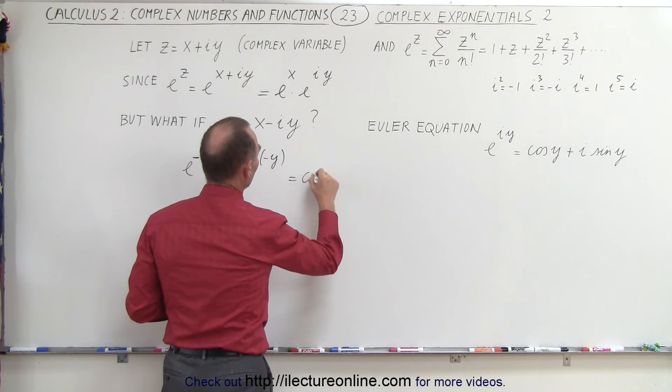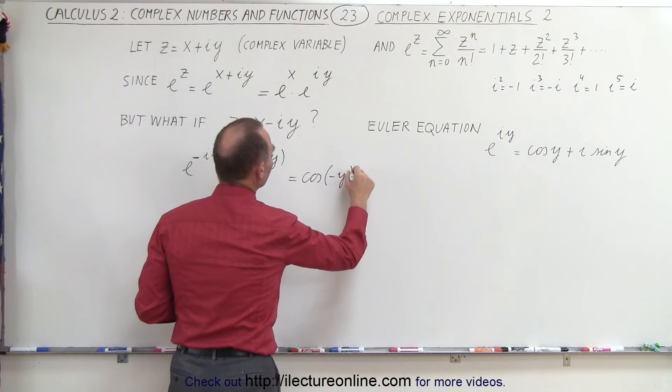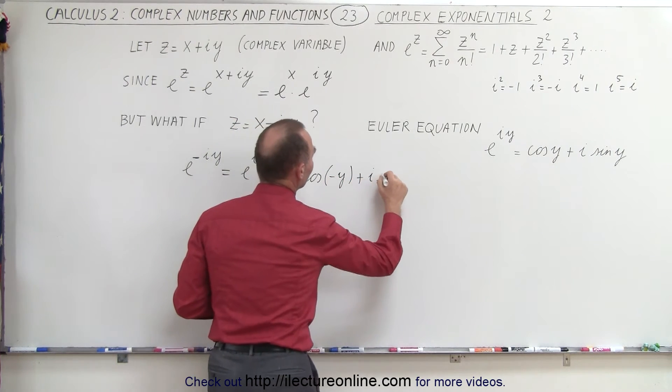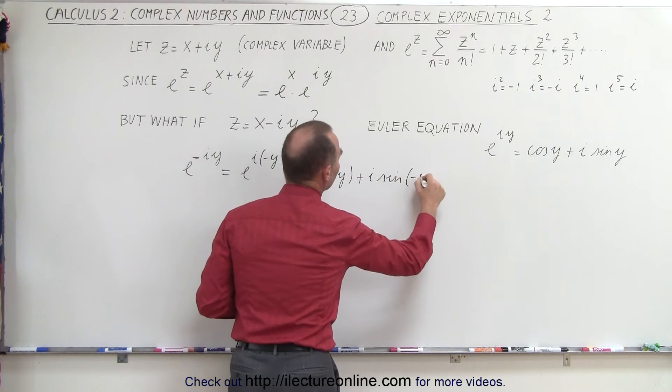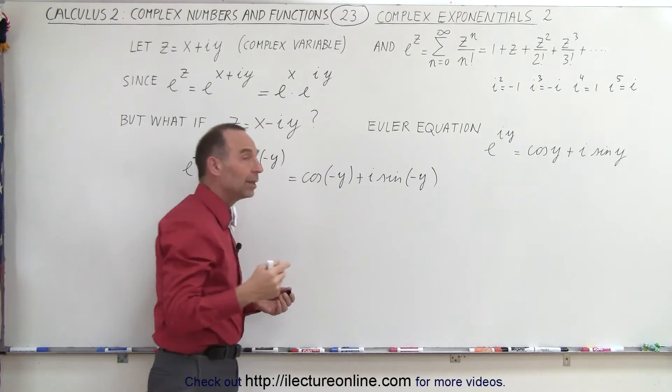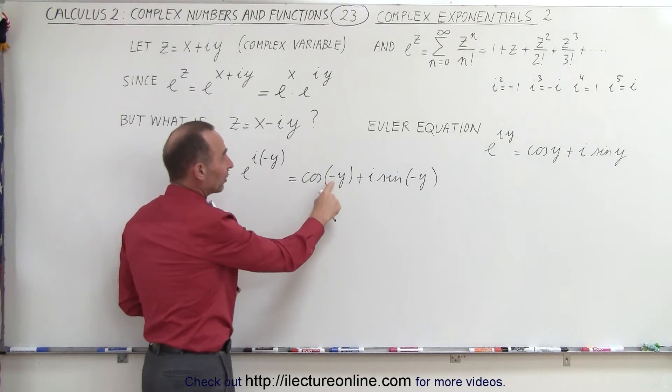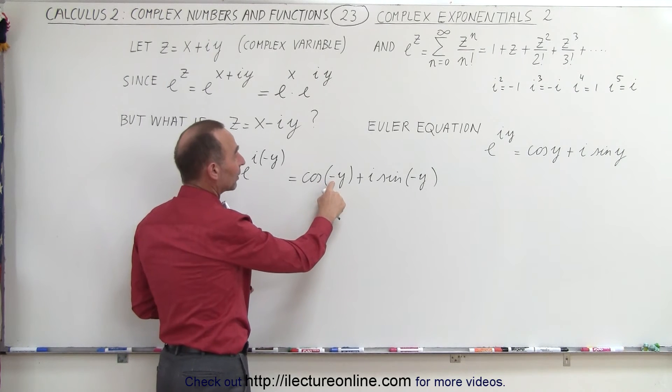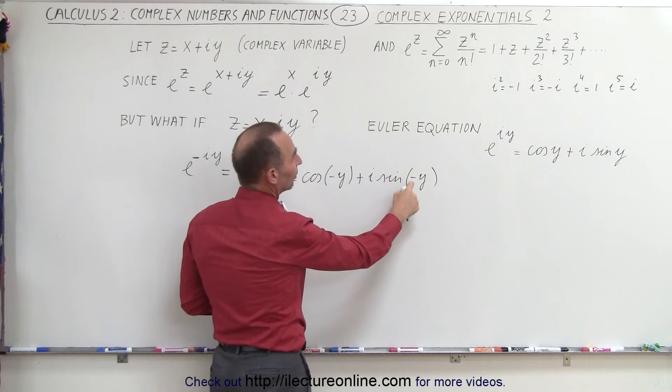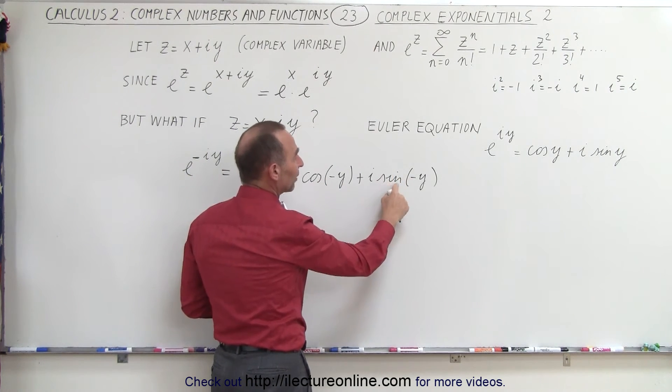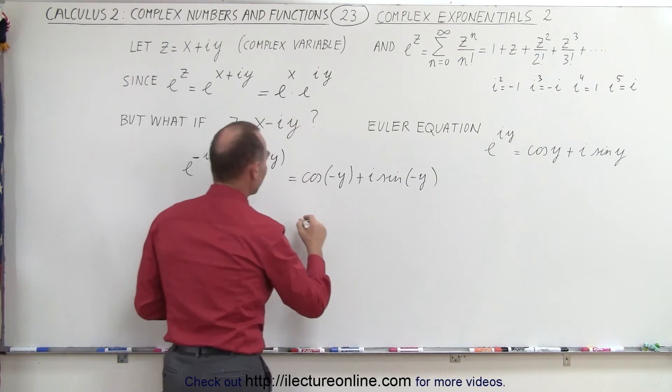So this can then be written as the cosine of negative y plus i times the sine of negative y. And then we realize that the cosine of a negative angle is the same as the cosine of the positive angle and the sine of a negative angle is equal to the negative of the sine of the positive angle.